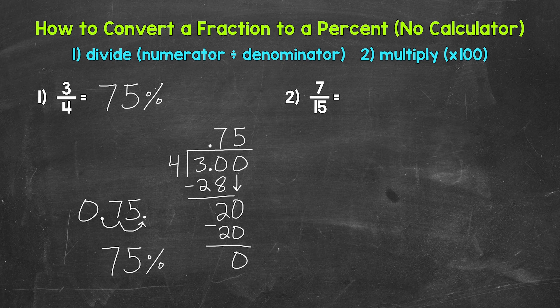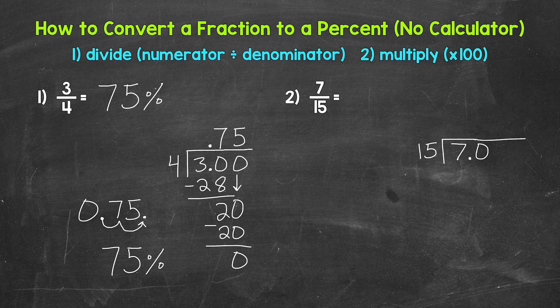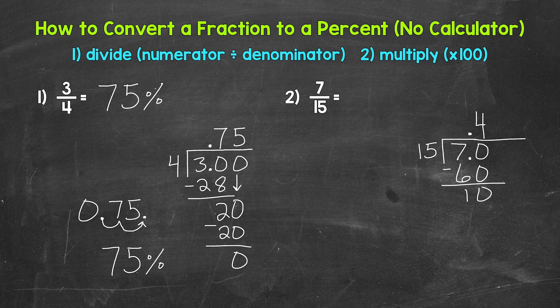Let's move on to number two, where we have seven fifteenths. We need to do seven divided by 15 — the numerator divided by the denominator. Now, how many whole groups of 15 in seven? We can't do that, so let's use a decimal and a zero in order to work through this problem. Extend the division bar, bring the decimal straight up. Now we can think of this as 70 divided by 15. How many whole groups of 15 in 70? Four — that gets us to 60. Multiply four times 15 is 60. Subtract — 70 minus 60 gives us 10.